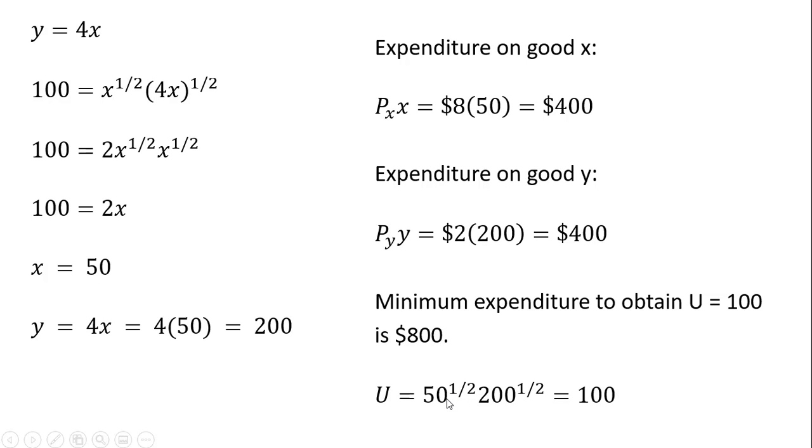And you'll note here, if we were to evaluate our utility function at x equals 50 and y equals 200, we get 100 units of satisfaction. There are certainly other combinations that will give you 100 units of satisfaction, but this is the cheapest. All right. That's it. I hope you found this video helpful.